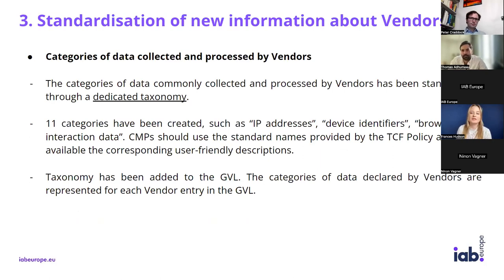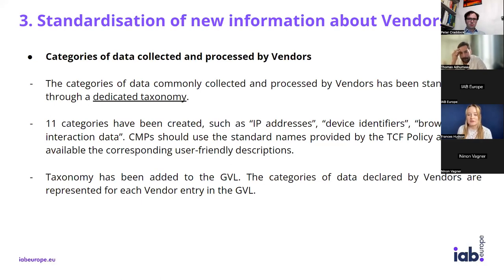In order to improve the transparency of disclosures made to users within the TCF, some new information has been added to the list of disclosures vendors must make as part of their registration on the GVL, and these new disclosures will need to be included within the CMP UI. A new dedicated taxonomy has been created to categorize the types of data collected and processed by vendors. Eleven categories have been created, such as IP addresses or device identifiers, each accompanied by a user-friendly description. CMPs are required to disclose the categories of data that each vendor is collecting and processing, along with the user-friendly descriptions.